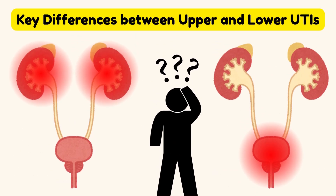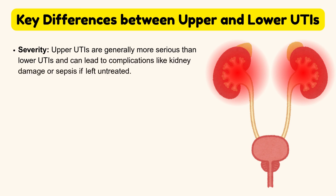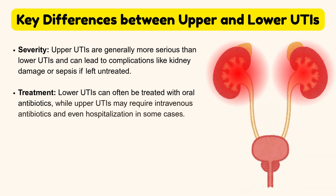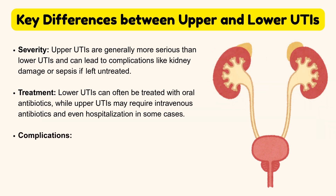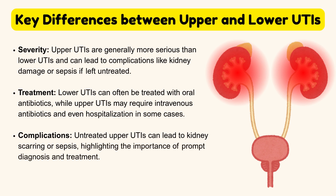In summary, the key differences between upper and lower UTIs are as follows. Severity: upper UTIs are generally more serious and can lead to complications like kidney damage or sepsis if left untreated. Treatment: lower UTIs can often be treated with oral antibiotics, while upper UTIs may require intravenous antibiotics and even hospitalization. Complications: untreated upper UTIs can lead to kidney scarring or sepsis, highlighting the importance of prompt diagnosis and treatment.